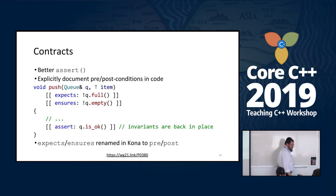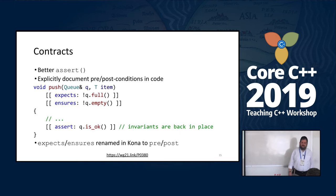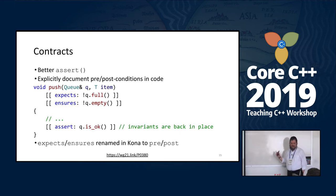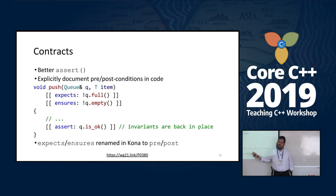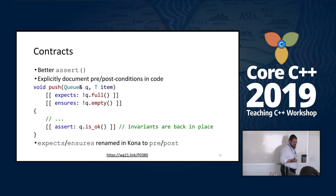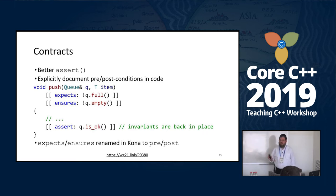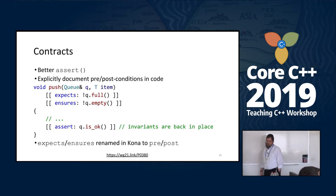As I said, C++20 is still changing. On the last meeting of the committee in Kona last February, they changed the naming — so instead of 'expect' and 'ensures', now it's 'pre' and 'post'. Probably easier to remember.